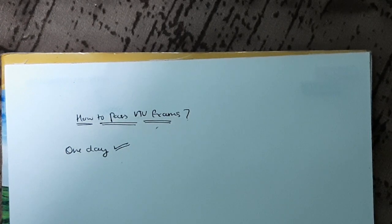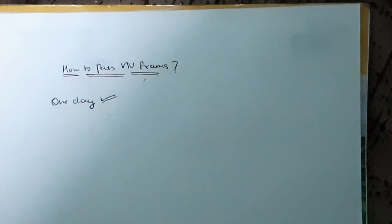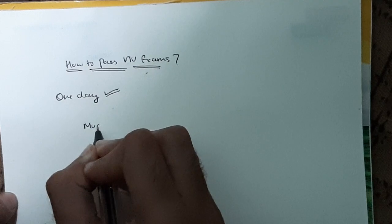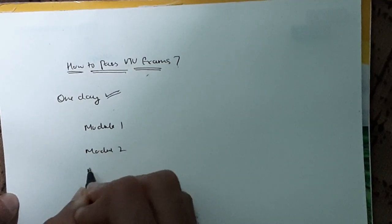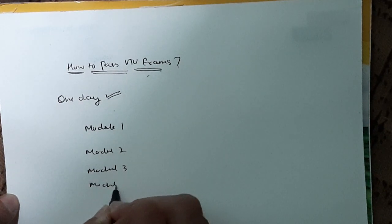First, let me tell you how many modules are there. Take any subject in any semester, any branch in VTU - there are totally five modules: Module 1, Module 2, Module 3, Module 4, and Module 5.